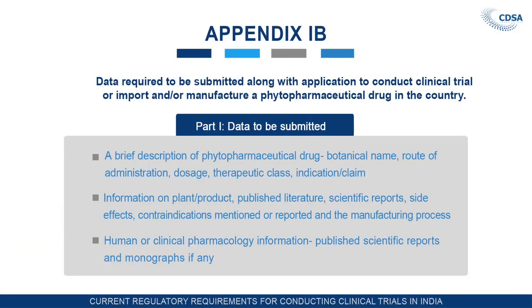Appendix 1B was added in 2015 and covers data required to be submitted along with the application to conduct a clinical trial or to import and/or manufacture a phytopharmaceutical drug.